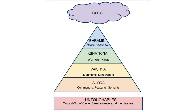At the very top of the caste system in ancient India are the priests. They're at the top because they're considered to be closest to the gods. Just below the priests you have the warriors, the kings and the rulers, which are known as the Kshatriyas.